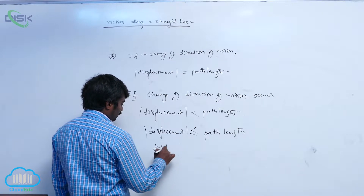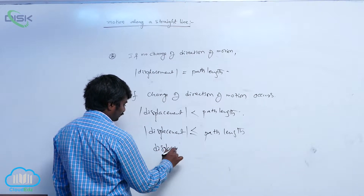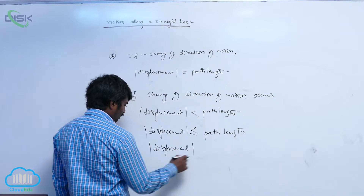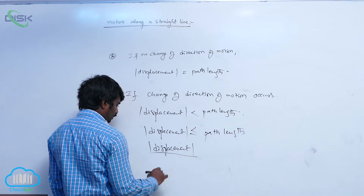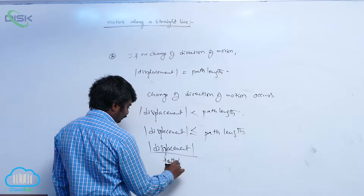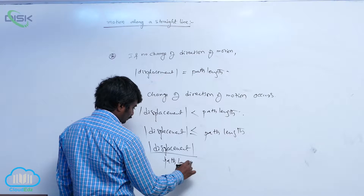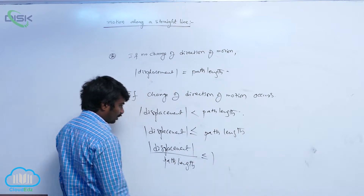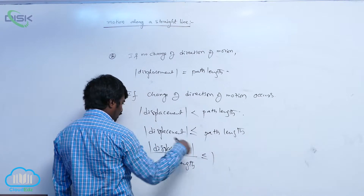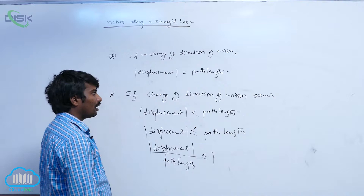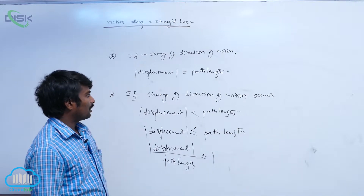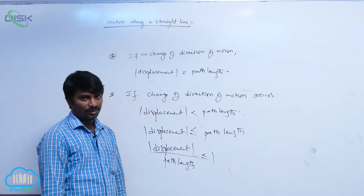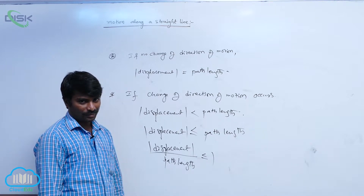So, you can write that displacement magnitude divided by path length is less than or equal to 1, or path length divided by displacement is always greater than or equal to 1.